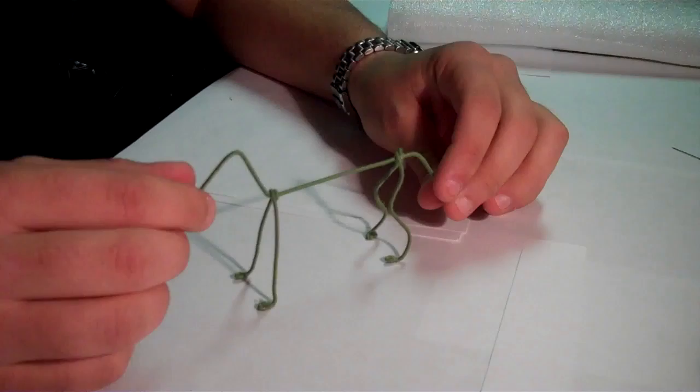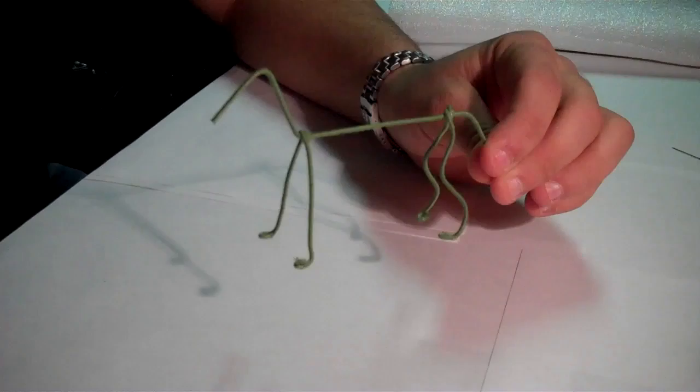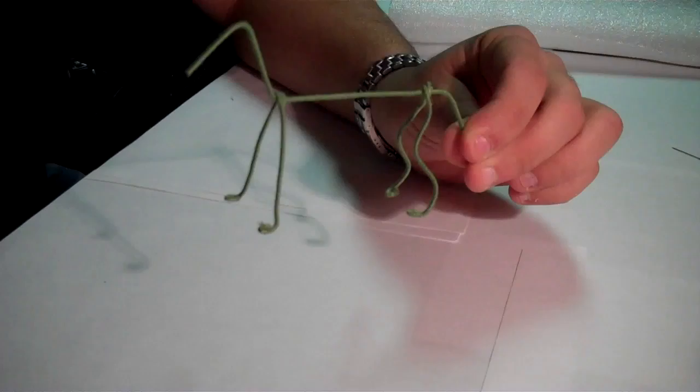The first step after you organize your supplies is to make the outline of the animal you want to make. In this case I am making a dog. It is simple, just like drawing a stick figure dog. That is what you need to envision when you make it.